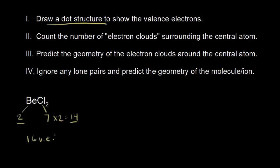We put the less electronegative atom in the center, so beryllium goes in the center, surrounded by 2 chlorines. We show beryllium bonded to 2 chlorines, and we've just represented 4 valence electrons — 2 here and 2 here, for a total of 4. So instead of 16, we've shown 4, meaning we're down to 12 valence electrons left to account for.